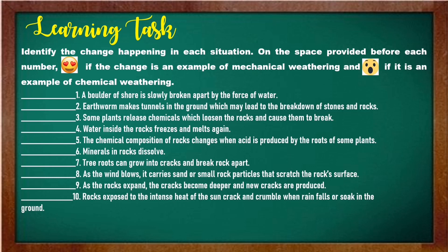Number six: minerals in rocks dissolve. Number seven: tree roots can grow into cracks and break rock apart. Number eight: as the wind blows, it carries sand or small rock particles that scratch the rock surface. Number nine: as the rocks expand, the cracks become deeper and new cracks are produced. Number ten: rocks exposed to the intense heat of the sun crack and crumble when rain falls or soaks into the ground.